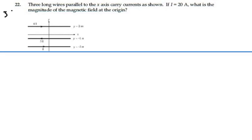Here's problem 3022. Three long wires parallel to the x-axis carry currents as shown. If I is equal to 20 amps, what is the magnitude of the magnetic field at the origin?